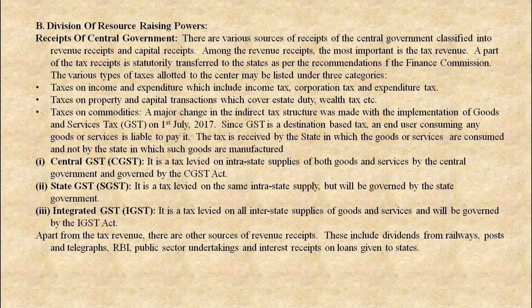Division of resource raising powers — receipts of the central government. There are various sources of receipts classified into revenue receipts and capital receipts. Among the revenue receipts, the most important part is tax revenue. A part of the tax receipt is statutorily transferred to the states as per the recommendations of the Finance Commission. The various types of taxes allotted to the center are listed under three categories: taxes on income and expenditure, which include income tax, corporation tax, and expenditure tax.